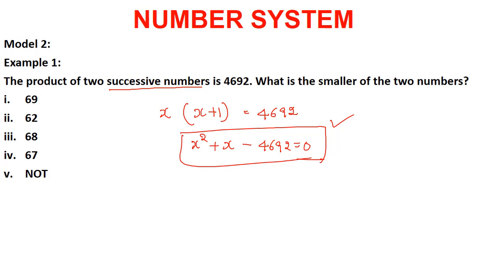So we can eliminate wrong options using the unit digit method. The product ends in 2, so we check the unit digits of each option. For option with smaller number 69: 69 × 70, unit digits 9 × 0 = 0, not 2 — eliminated. For 62: 62 × 63, unit digits 2 × 3 = 6, not 2 — eliminated.